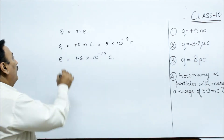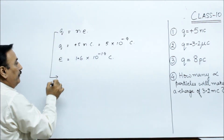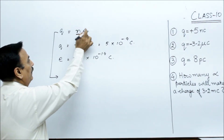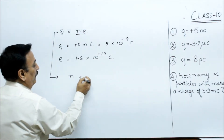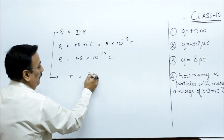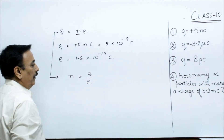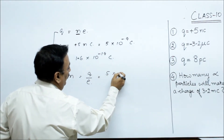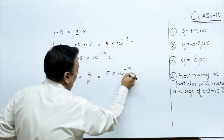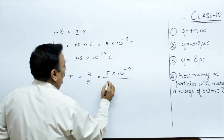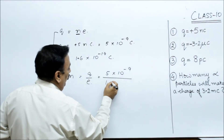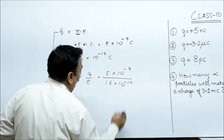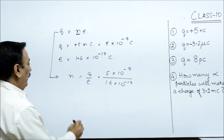So let us apply the formula. n is equal to q upon e, so q is equal to 5 into 10 raised to the power minus 9, divided by 1.6 into 10 raised to the power minus 19 C.